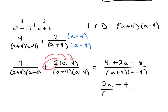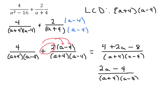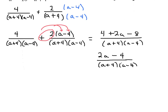So this gives us 2a, and 4 minus 8 is negative 4, over a plus 4 times a minus 4. And then we're always going to factor out anything from the top — we can see there's a factor of 2 in each of these. So we take a 2 out of the numerator, leaving us with a minus 2. On top we have 2(a minus 2) over a plus 4 times a minus 4.